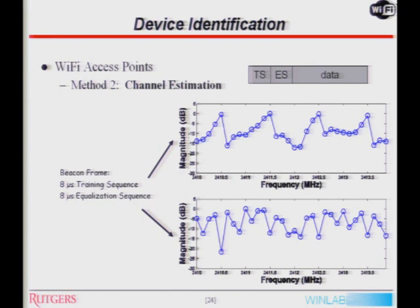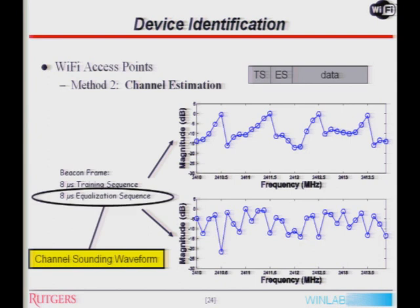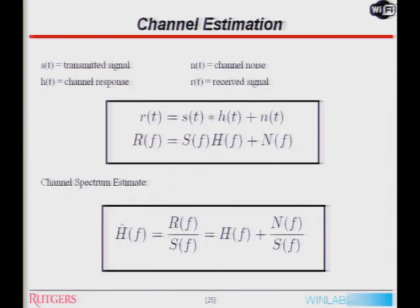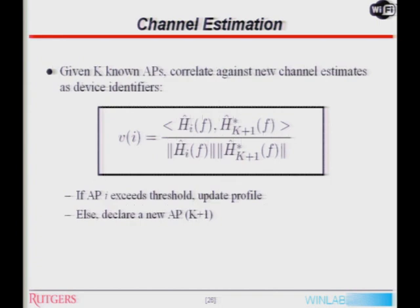Can we use these transmissions to estimate the channel between a legitimate access point and, say, a rogue access point? By looking at the channel estimation procedure, we have the received signal — the transmitted signal going over the channel with some additive noise. Since we know what the signal transmitted was, we can estimate the channel spectrum with some additive noise component. The idea is that every time I receive a beacon signal, I obtain a channel estimate, correlate it against known existing access points in my database, and if I'm close enough, I conclude the beacon came from that access point. If far enough away, it's probably a new access point in the region.